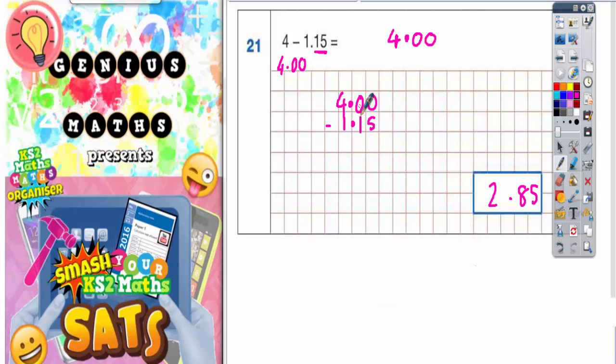So you need to borrow from this 0. But you can't borrow from this 0. So you've got to borrow from the 4. So if we borrow from the 4 that becomes a 3 and the 1 we borrowed makes this 0 into a 10. Then cross out the 10 and that becomes 9 and the 1 you borrowed makes this 0 into a 10.